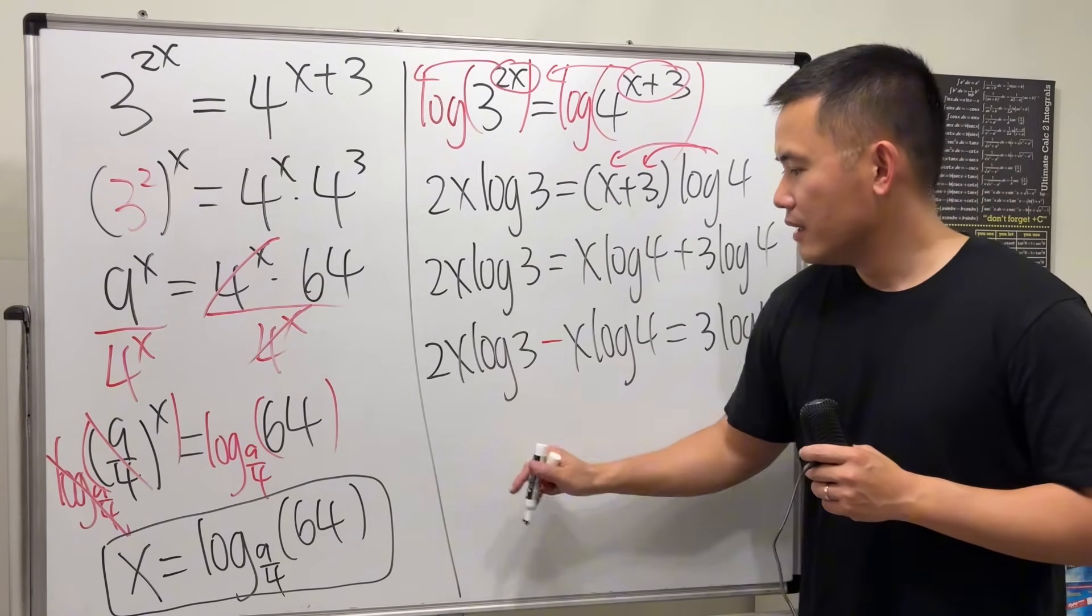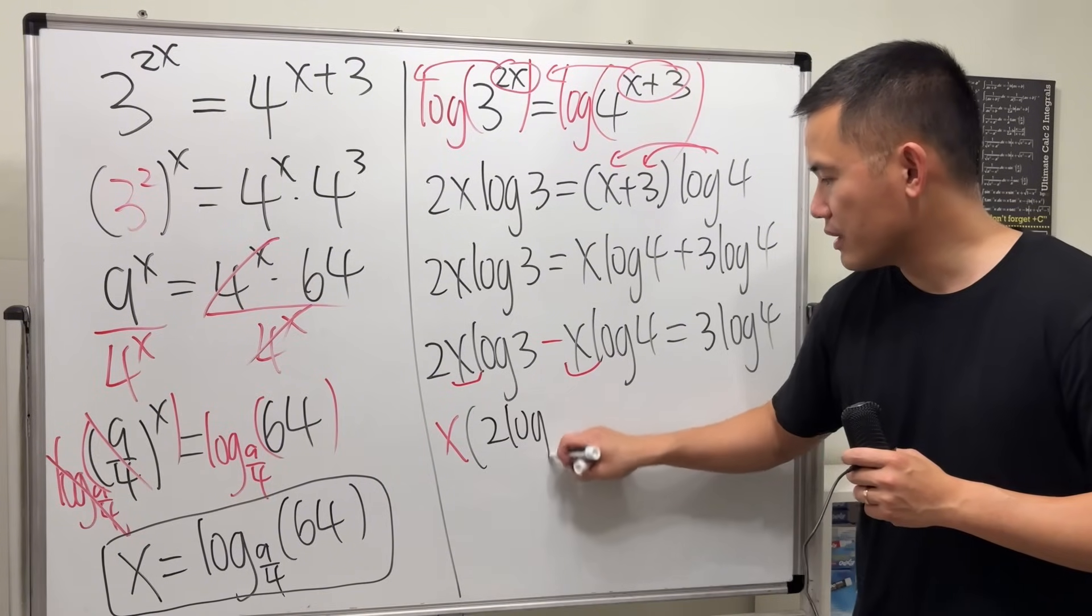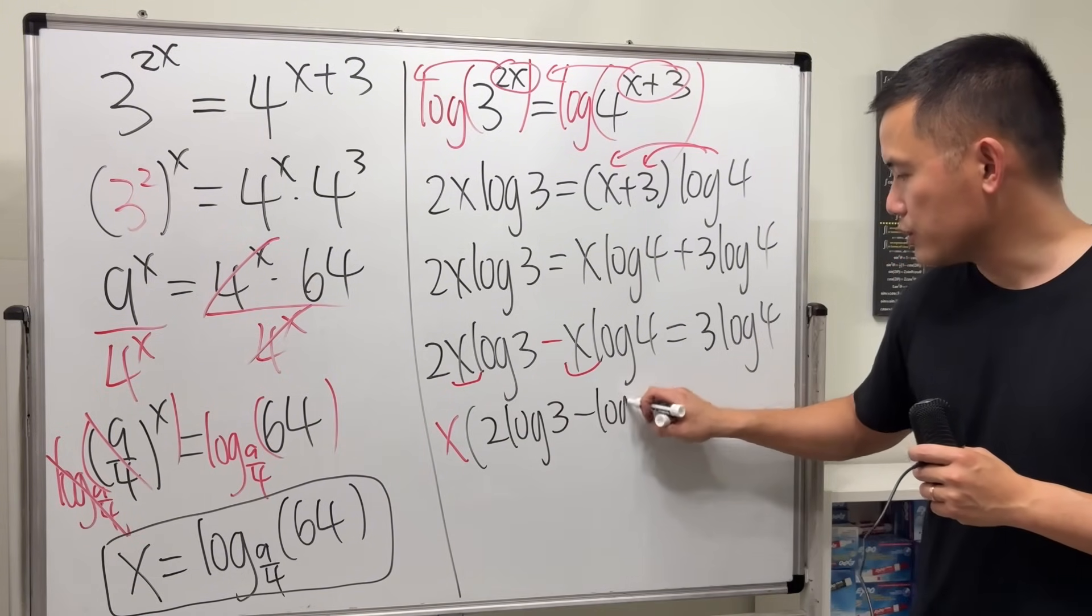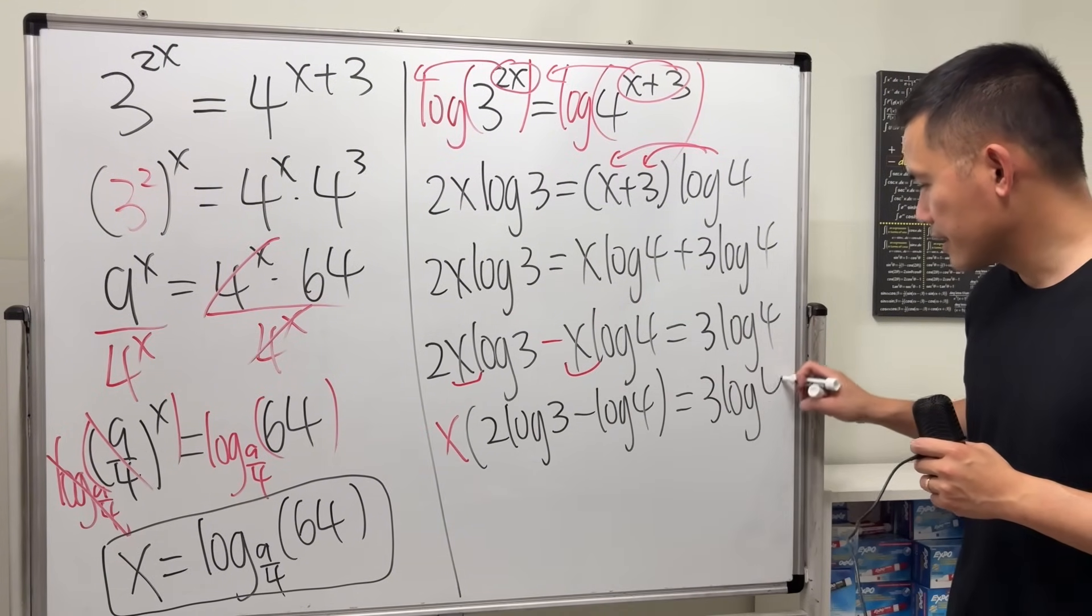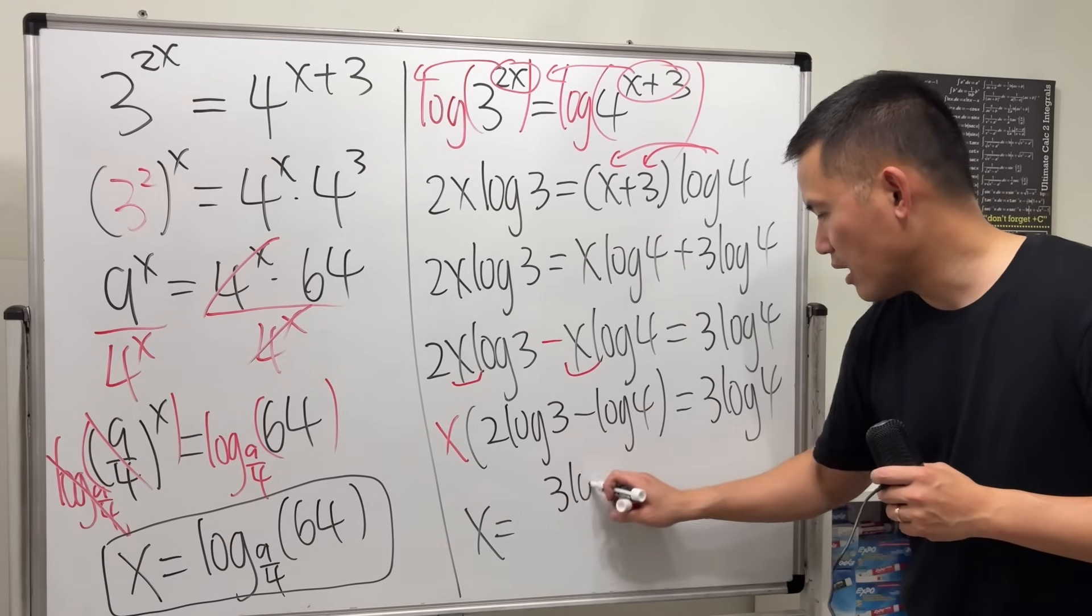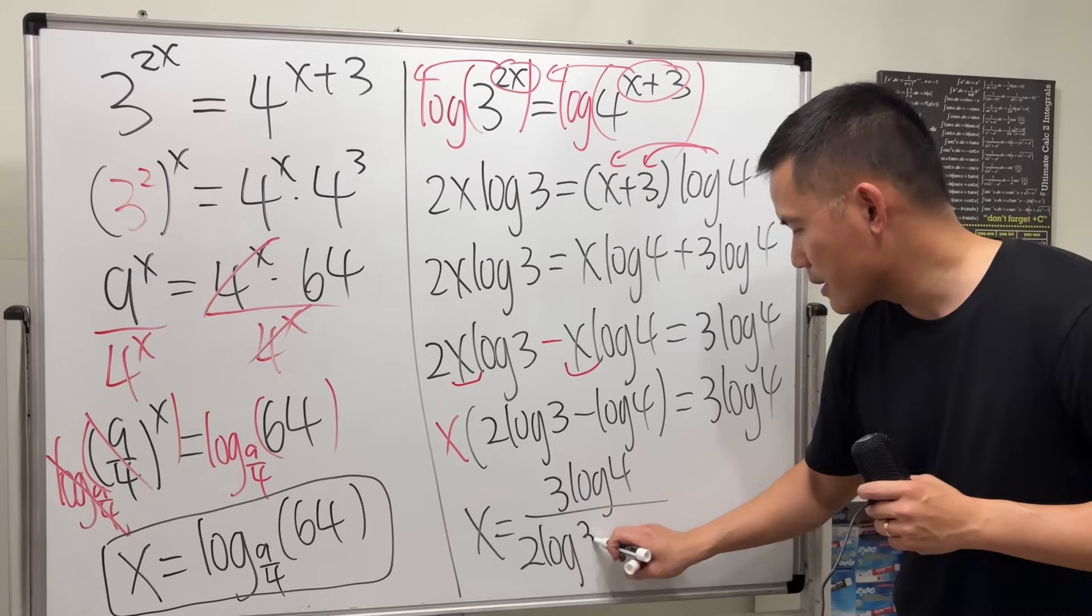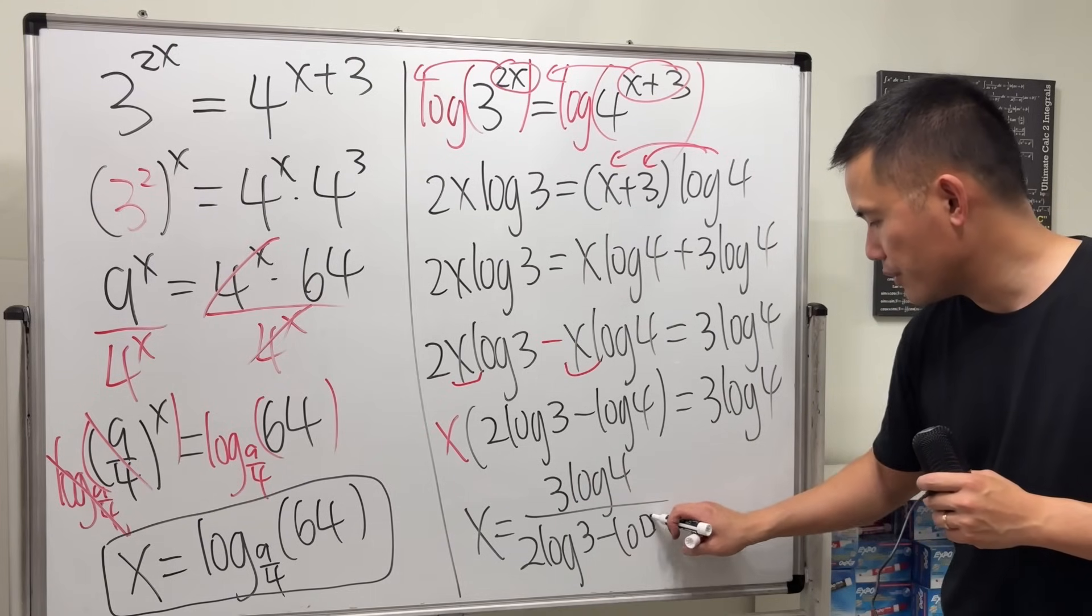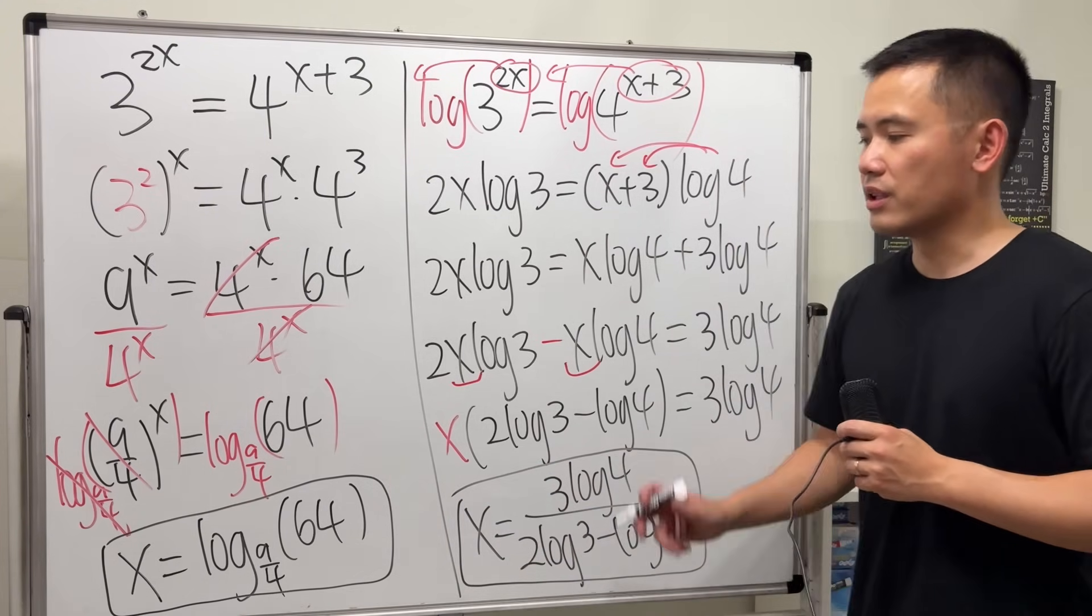Finally, factor out the x, and then we have this right here. And then we can just divide this to both sides, and then we'll be done. So x = 3·log(4) over 2·log(3) - log(4). I think this is more of a standard approach to solve this kind of question.